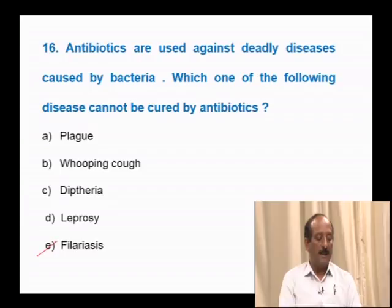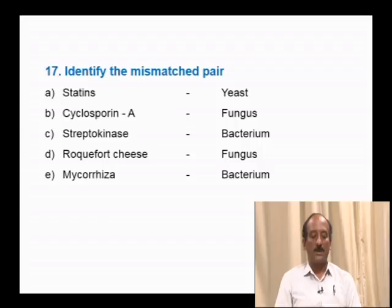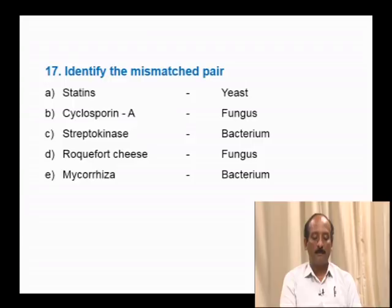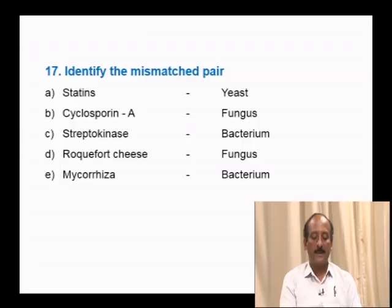Question number 17: Identify the mismatched pair — statins/yeast; cyclosporin A/fungus; streptokinase/bacteria; Roquefort cheese/fungus; mycorrhiza/bacterium. Statins are from yeast, cyclosporin A from fungus, streptokinase from bacteria, and Roquefort cheese aroma is improved by fungi — all correctly matched. However, mycorrhiza is a fungus, not a bacterium. Hence, mycorrhiza/bacterium is not correctly matched. The correct answer is option E.